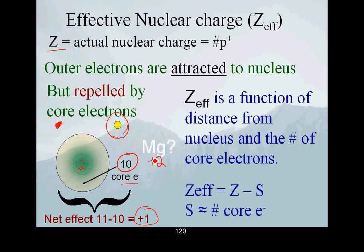We can actually calculate a value for Z effective in a rough and tumble way by simply taking the actual charge minus the number of core electrons. So as we said, for sodium, the actual charge is 11, but there are 10 core electrons, so Z effective is one.